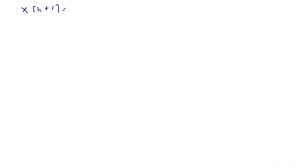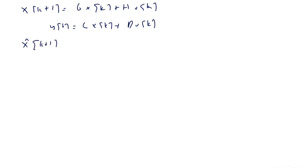This is the original system: X(K+1) = G·X(K) + H·U(K), and Y(K) = C·X(K) + D·U(K). So we have X(K+1) which is equal to G times X(K) plus H times U(K).